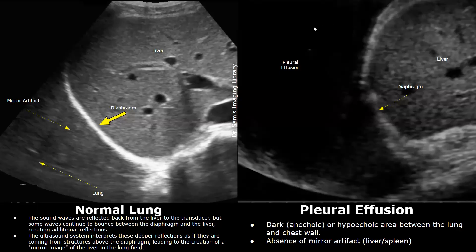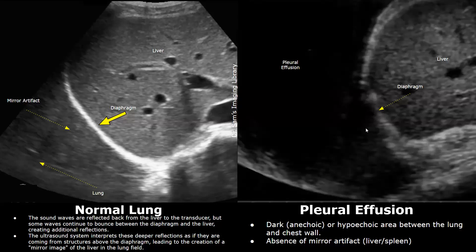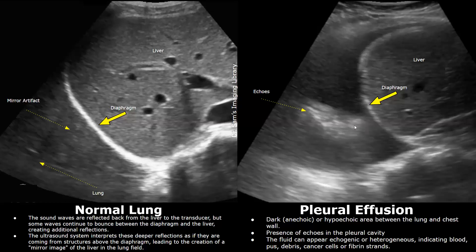In cases of pleural effusion, when there is an abnormal accumulation of fluid in the pleural cavity, we will normally see an anechoic fluid above the diaphragm. If the fluid is clear, we will simply see a jet black area above the diaphragm — an anechoic area. This appearance indicates pleural effusion. The mirror artifact will not be seen; there is absence of a mirror image of the liver or spleen.